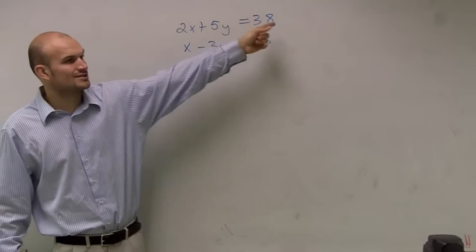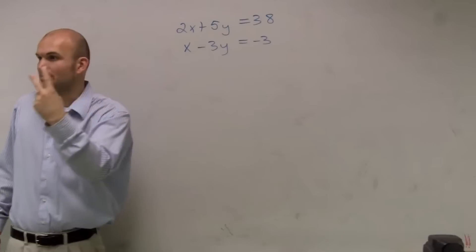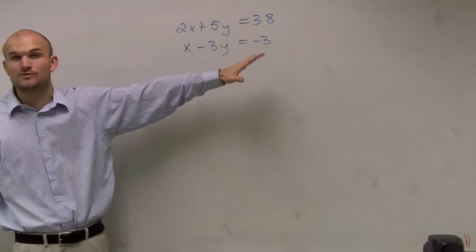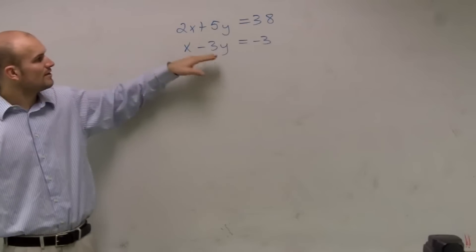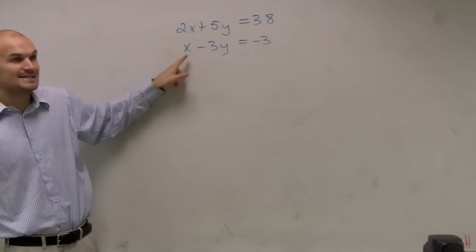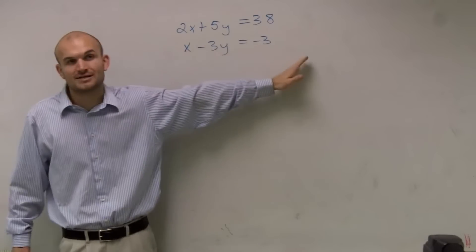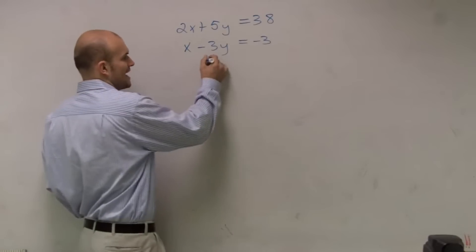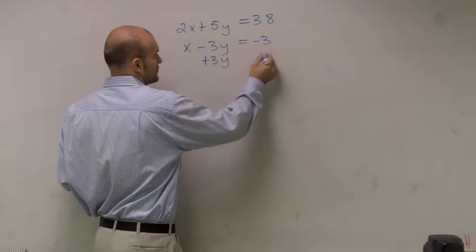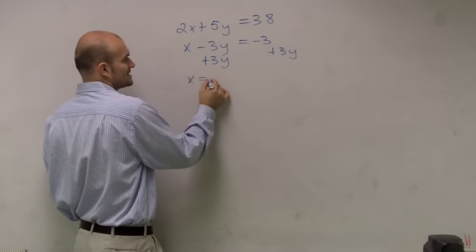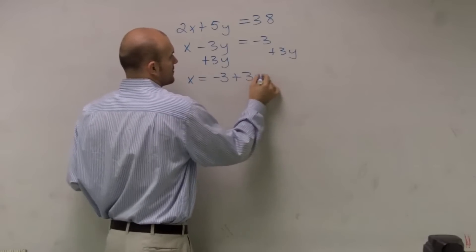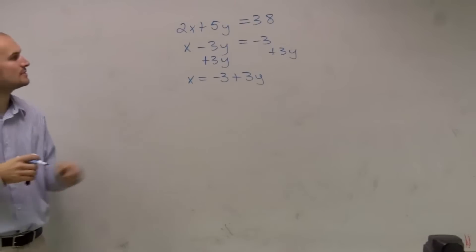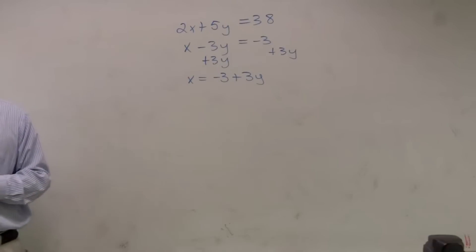To solve for y, I have to subtract the 2x and then divide by 5. Either way, it's going to be two steps and we're going to be left with fractions. However, if I look at the second equation, it's really easy to solve for x — all I have to do is add the 3y to the other side, since 1 is my coefficient for x. So I'm left with x equals negative 3 plus 3y.